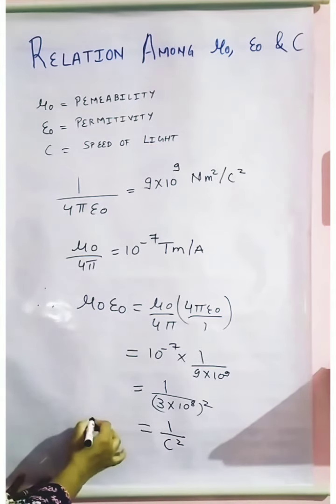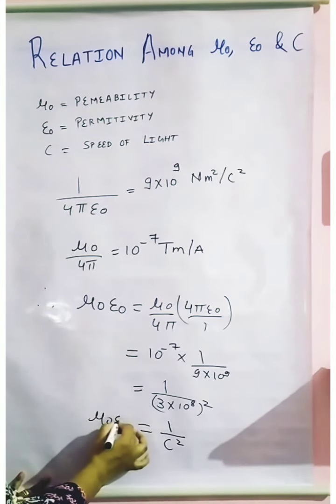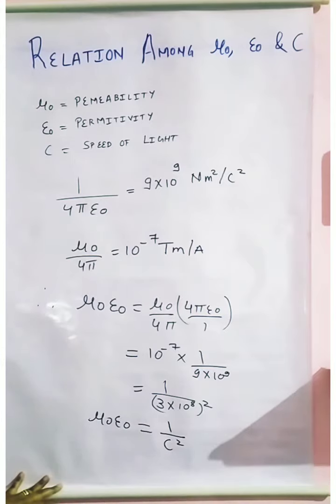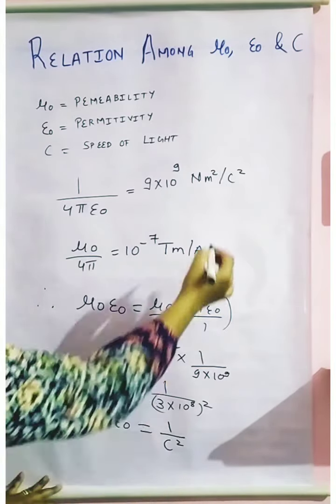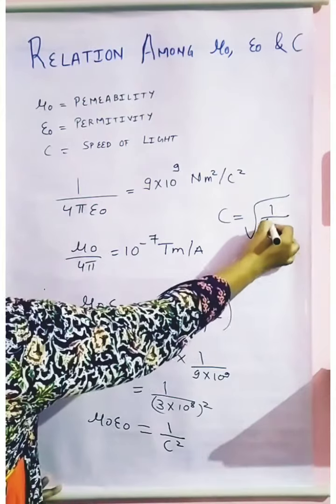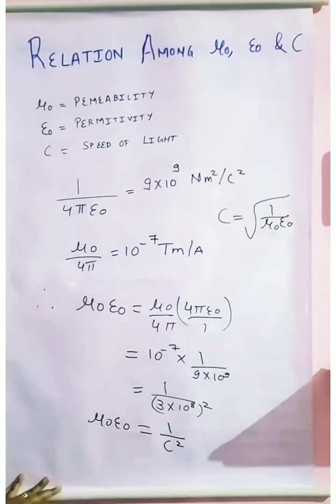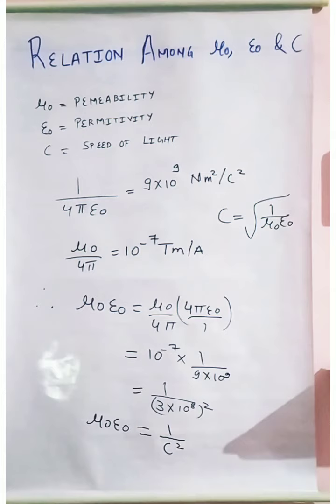I am already taking the left-hand side μ₀ into ε₀. So from this I will get my expression as, here I am writing, my expression will be c equals to under root of 1 upon μ₀ into ε₀. So this is the relation among these three.